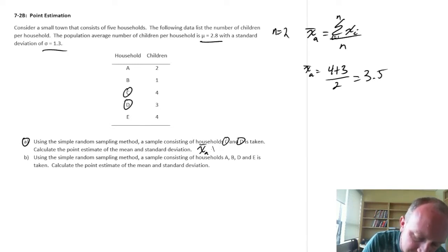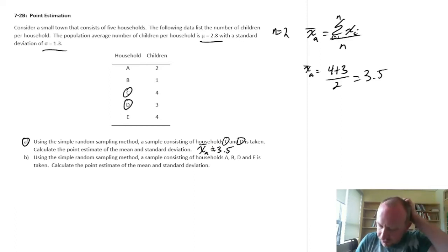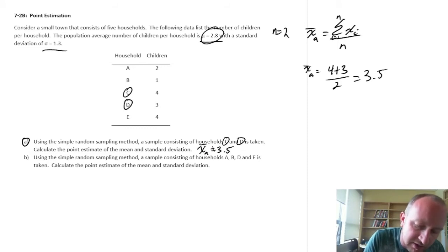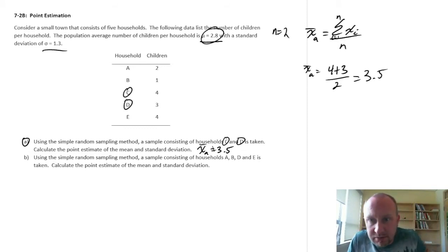So X bar for A is 3.5. So that's our best guess, that's our point estimate of this mean. As you can see, we're off by a little bit. But given a small sample of two observations, that's the best that we can do. 3.5.